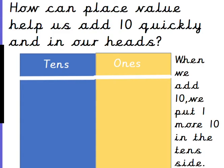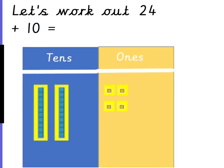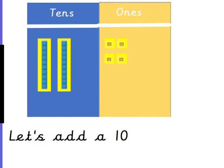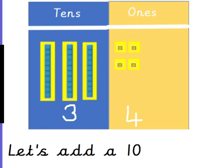How can place value help us add 10 quickly and in our heads? When we add 10, we put one more in the 10's side, so the 10's number will change. We won't be adding any more 1's though, so the number in the 1's side will stay the same. Let's work out 24 add 10. We've got two 10's and four 1's. If I add a 10, I have three 10's because 2 add 1 is 3. And I didn't touch the 1's, so I've still got 1, 2, 3, 4 ones. So now I have 34.